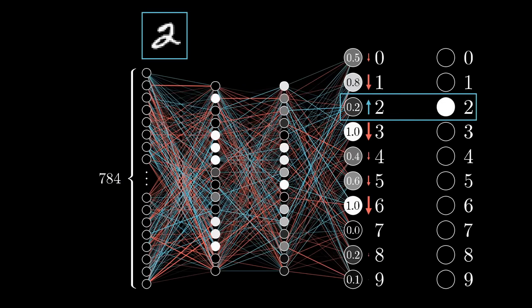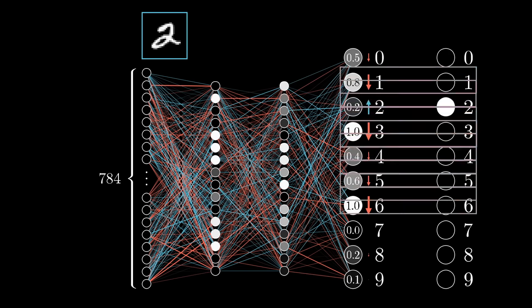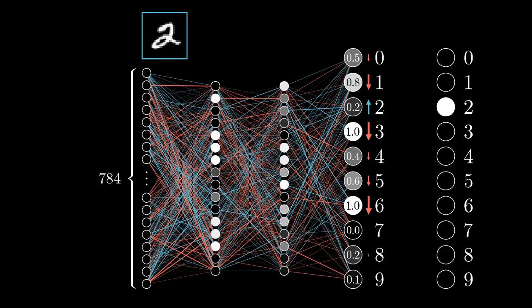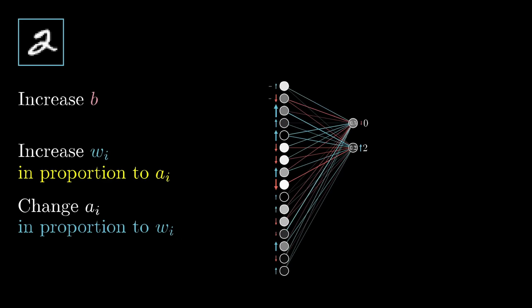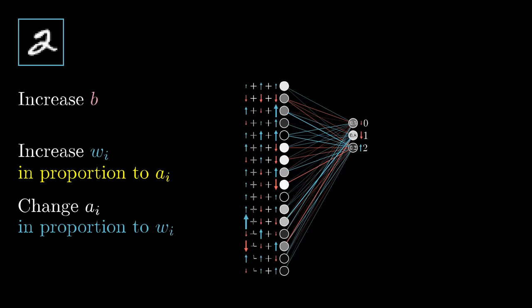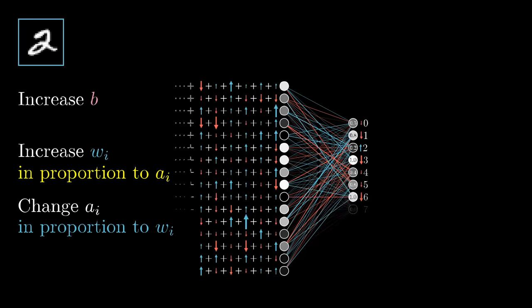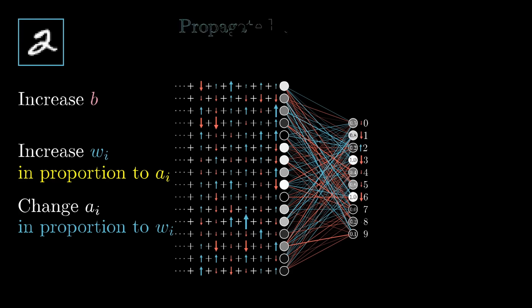Keep in mind, zooming out one step here, this is only what that digit 2 output neuron wants. Remember, we also want all of the other neurons in the last layer to become less active, and each of those other output neurons has its own thoughts about what should happen to that second to last layer. So, the desire of this digit 2 neuron is added together with the desires of all the other output neurons for what should happen to this second to last layer, again in proportion to the corresponding weights, and in proportion to how much each of those neurons needs to change. This right here is where the idea of propagating backwards comes in.